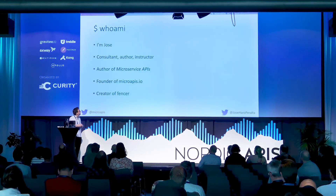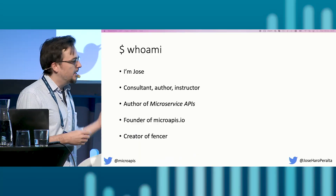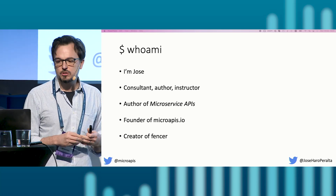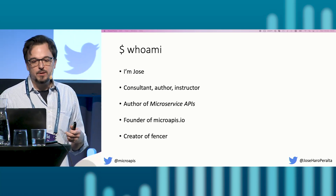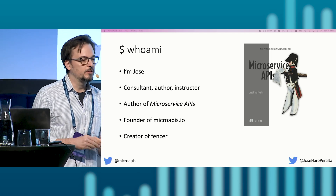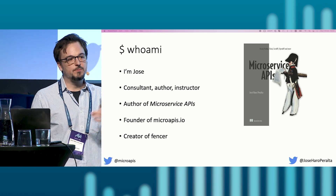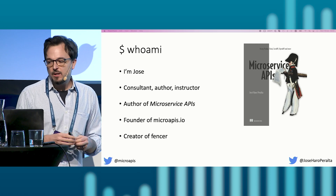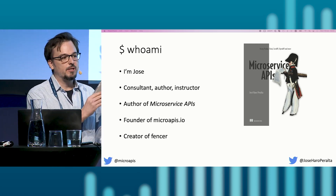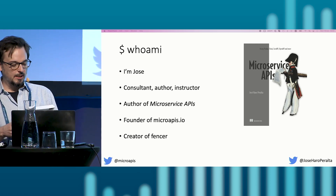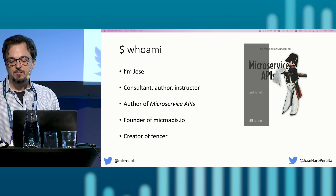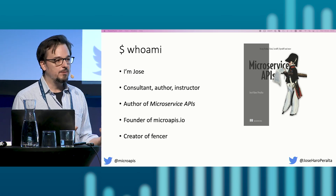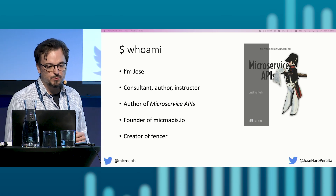My name is Jose. I'm the founder of microAPIs.io. I'm a consultant, author, and instructor. I work with companies of all kinds and sizes, from small startups to big corporations like AIG and IKEA. I'm the author of this book, Microservice APIs, which is designed as a step-by-step guide to help you in the journey to building microservices and APIs following best practices and principles.